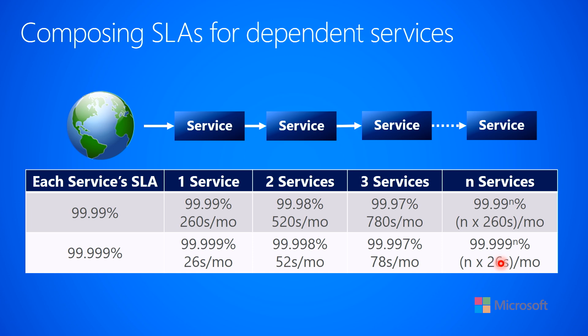It actually gets worse, because this is just the uptime of the services themselves. But what about the network connection between those services? Is there an SLA for the routers? Is there an SLA for the wires and the communication between them?